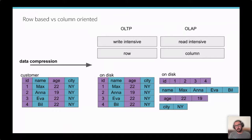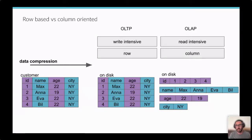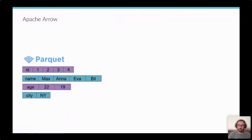Another big advantage of columnar data is compression. With a CSV file, the in-memory representation mirrors what's on disk with all columns and rows. But with columnar format, you can compress much more easily - resulting in a smaller data size. For example, a repeated city like New York only needs to appear once in the column list.